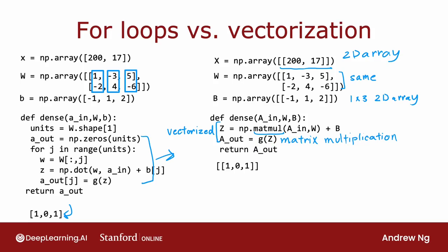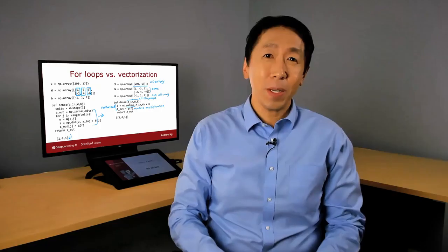This is what the code looks like. Notice that in the vectorized implementation, all of these quantities - X, which is fed into A_in, as well as W, B, Z, and A_out - all of these are now 2D arrays, matrices. This turns out to be a very efficient implementation of one step of forward propagation through a dense layer in the neural network. So this is code for a vectorized implementation of forward prop in a neural network.